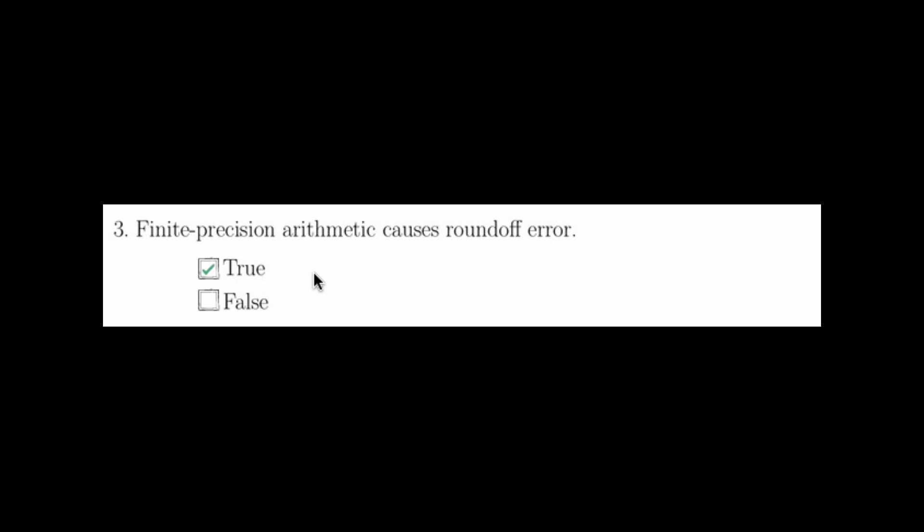Question four asks whether observational error can snowball over the course of a numerical solution to an ODE. This is false. Observational error is something that can be seen as dirt on your glasses — it's something you're getting at the observation level, but it is not being fed back into the system. This snowballing effect occurs whenever you have some kind of dynamical or numerical error that is fed back into the system at every time step.